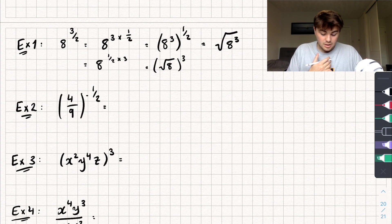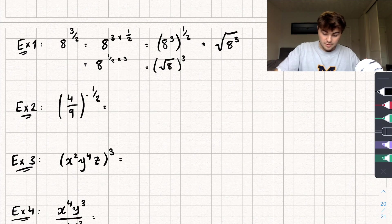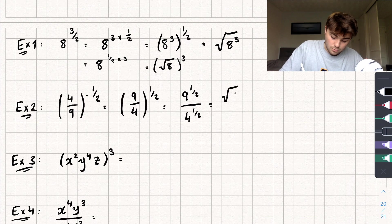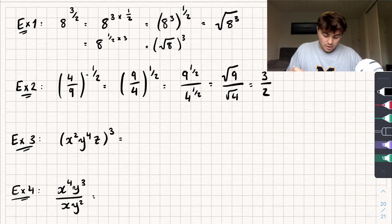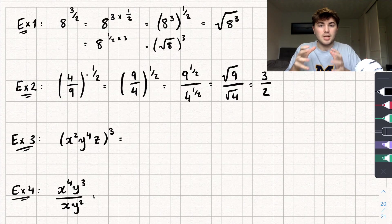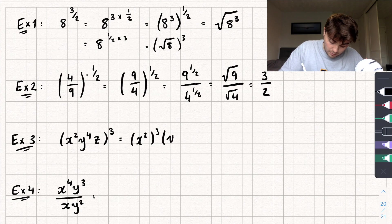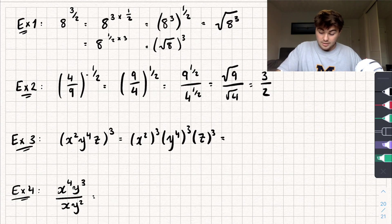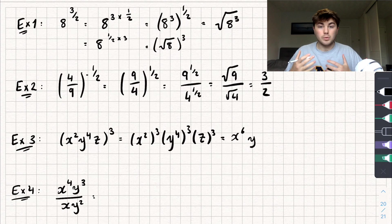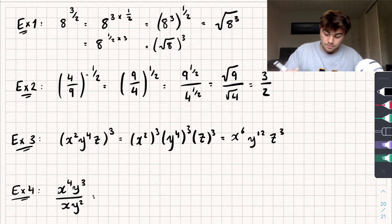Example 2: 4 over 9 to the power of negative 1 half. First remove the negative by flipping the fraction to get 9 over 4 all to the power of 1 half. That equals 9 to the power of 1 half over 4 to the power of 1 half, which is the square root of 9 over the square root of 4, giving 3 over 2. Example 3: x squared times y to the power of 4 times z, all cubed. Cube each part individually: x squared to the power of 3 gives x to the power of 6, y to the power of 4 times 3 gives y to the power of 12, and z cubed remains z cubed.